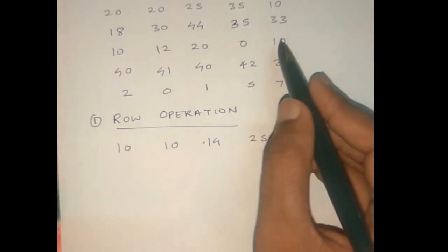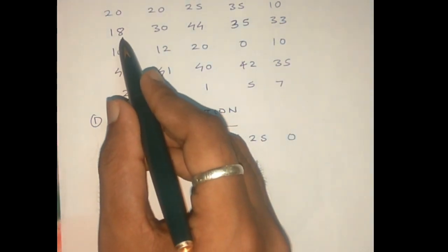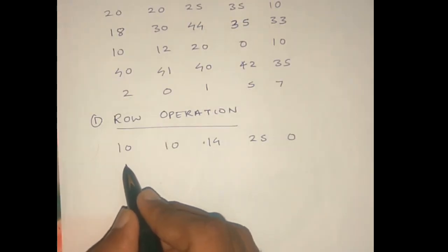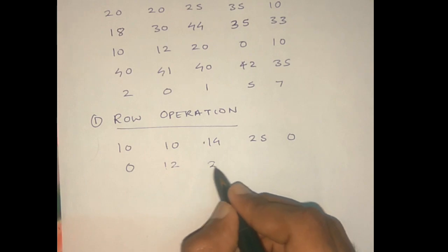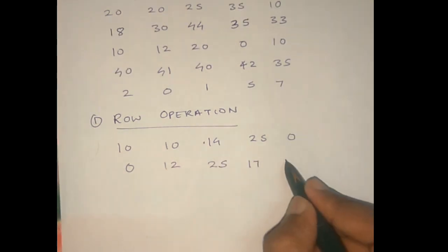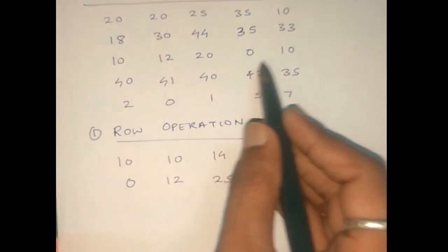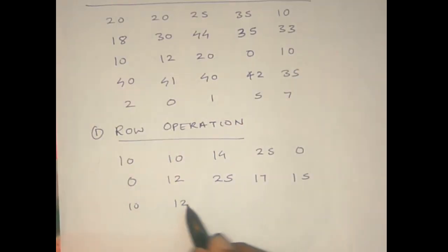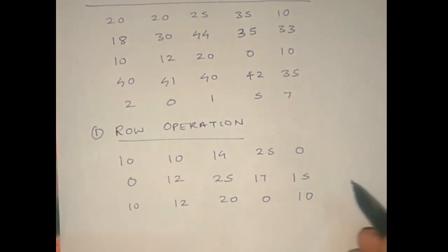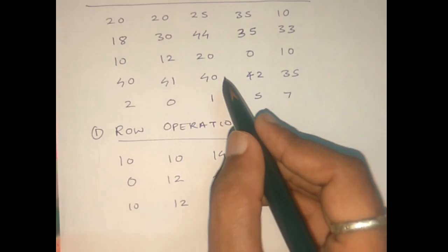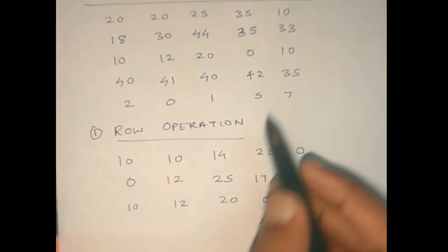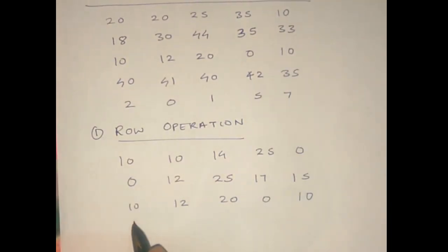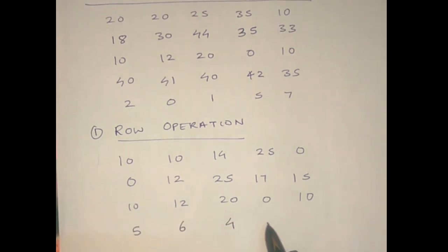Now we will see each row operation. For the second row, 18 is the least number, so we subtract 18 from each element in the second row. After performing all row operations, we see the results: 5, 6, 4, 7, 0.